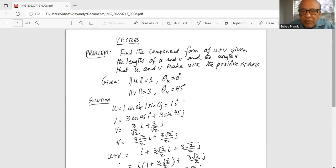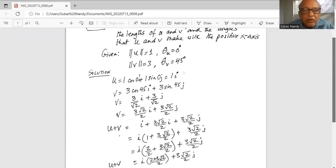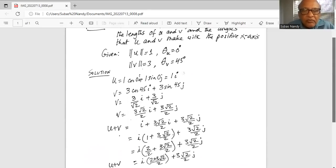Now we will add u and v. So u plus v: u is i plus from v 3 square root of 2 by 2i plus 3 square root of 2 divided by 2j. So if we take i out as a common factor for the first two terms, it is 1 plus 3 square root of 2 divided by 2, times i, plus 3 square root of 2 divided by 2j.